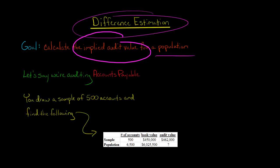Let's say we're auditing accounts payable. We've got a population of 6,500 - that's 6,500 different accounts, 6,500 different entities to which we owe money. The book value for that population is a little over $6,000,000, specifically $6,025,500.